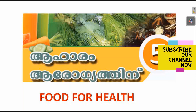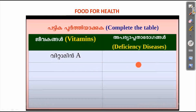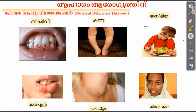Let's talk about activities. The first activity is to complete the table. The first activity is about deficiency diseases. We are specifically explaining what nutrients they are deficient in.